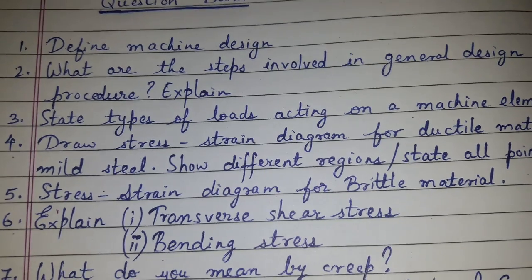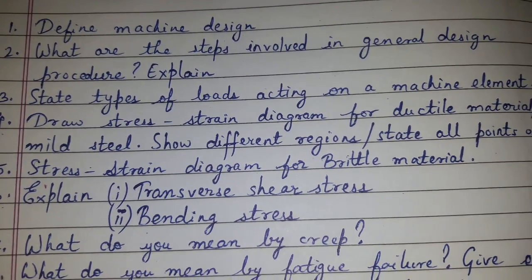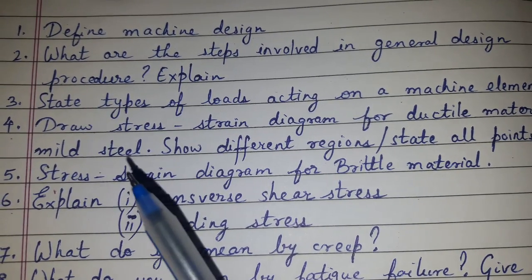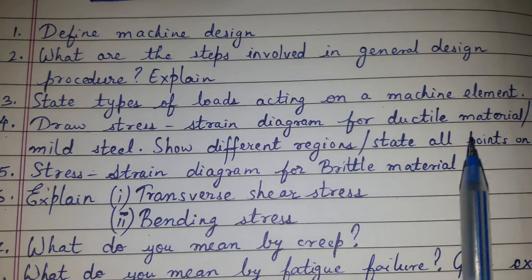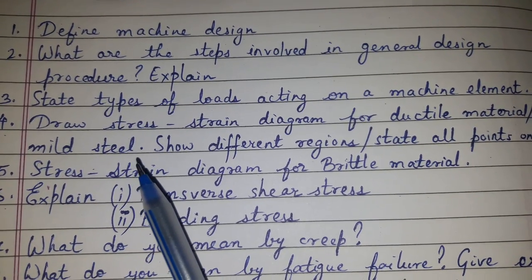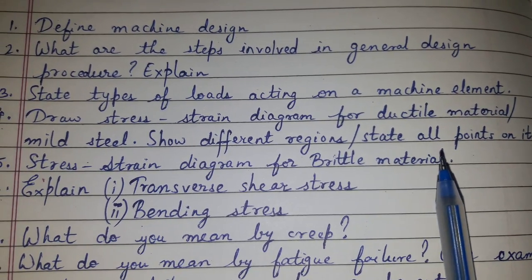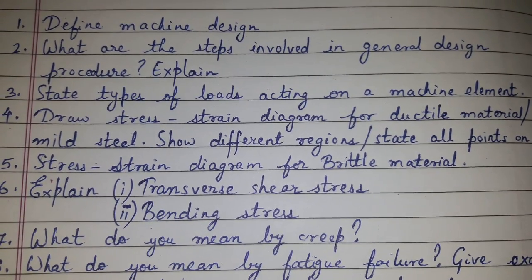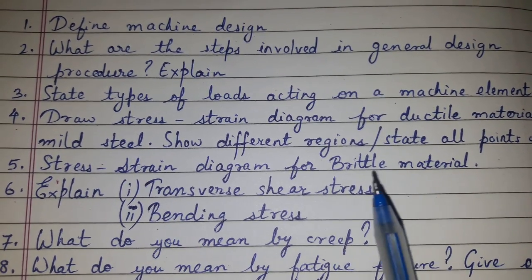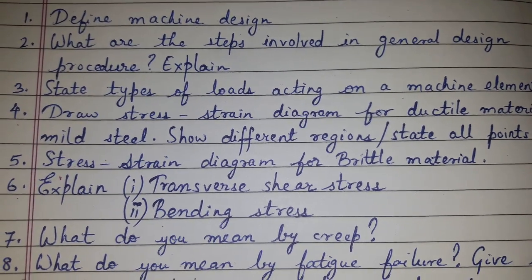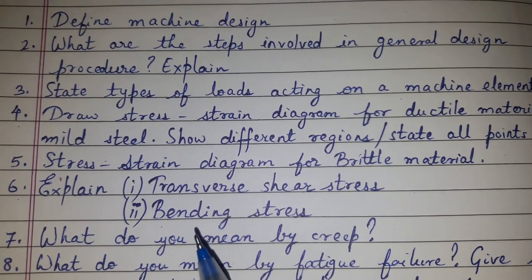Question number three: state the types of load acting on the machine element. Question number four: draw the stress-strain diagram for ductile material or mild steel — show different regions, or it may be asked to state all points on it. Question number five: draw the stress-strain diagram for brittle material.